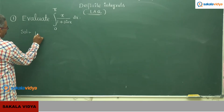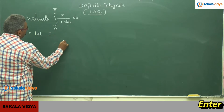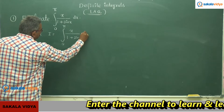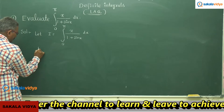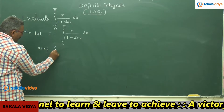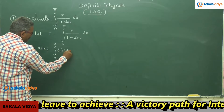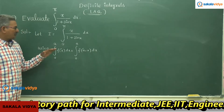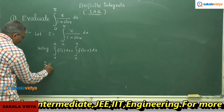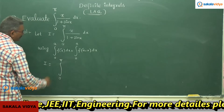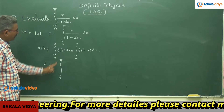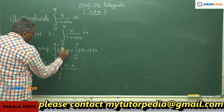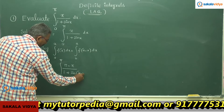Let I equal to the integral from 0 to π of x divided by (1 + sin x) dx. Using the property: integral from 0 to a of f(x) dx equals integral from 0 to a of f(a − x) dx, and applying this property, x is replaced by π − x. So we can write: I equals integral from 0 to π of (π − x) divided by (1 + sin(π − x)) dx.